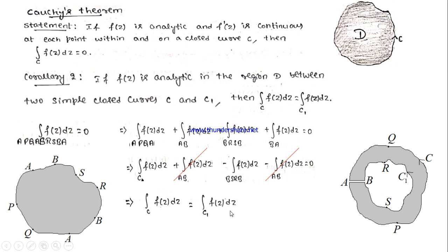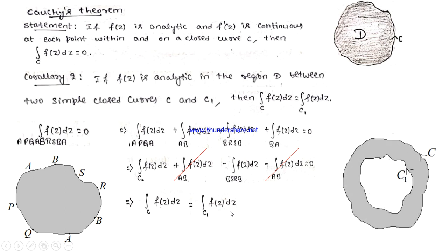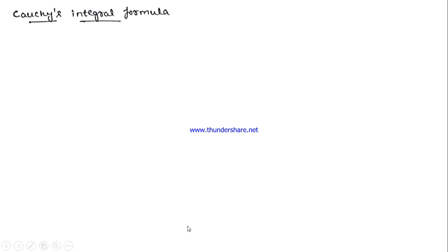We just proved that if f(z) is analytic in the annular region between the two closed curves C and C1, then the integration over C is the same as integration over C1. This will help us in deriving Cauchy's integral formula.